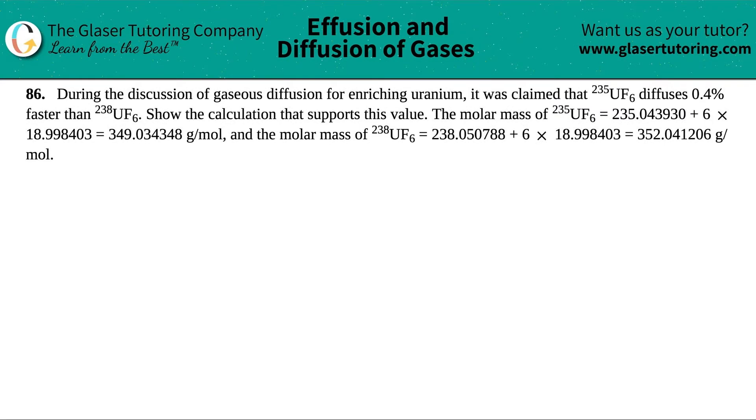Number 86. During the discussion of gaseous diffusion for enriching uranium, it was claimed that 235UF6 diffuses 0.4% faster than 238UF6.